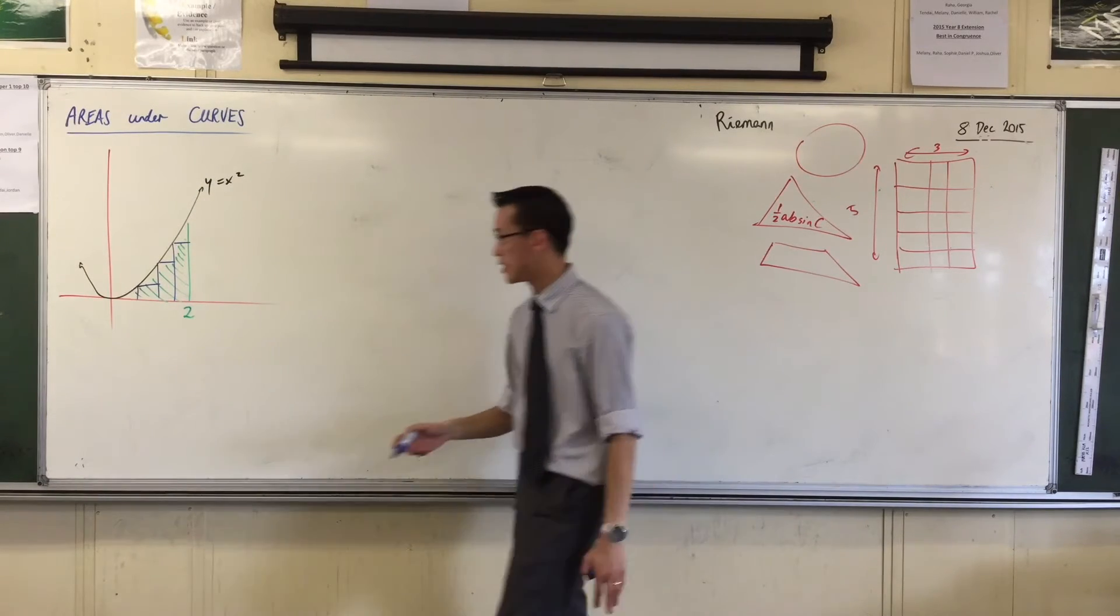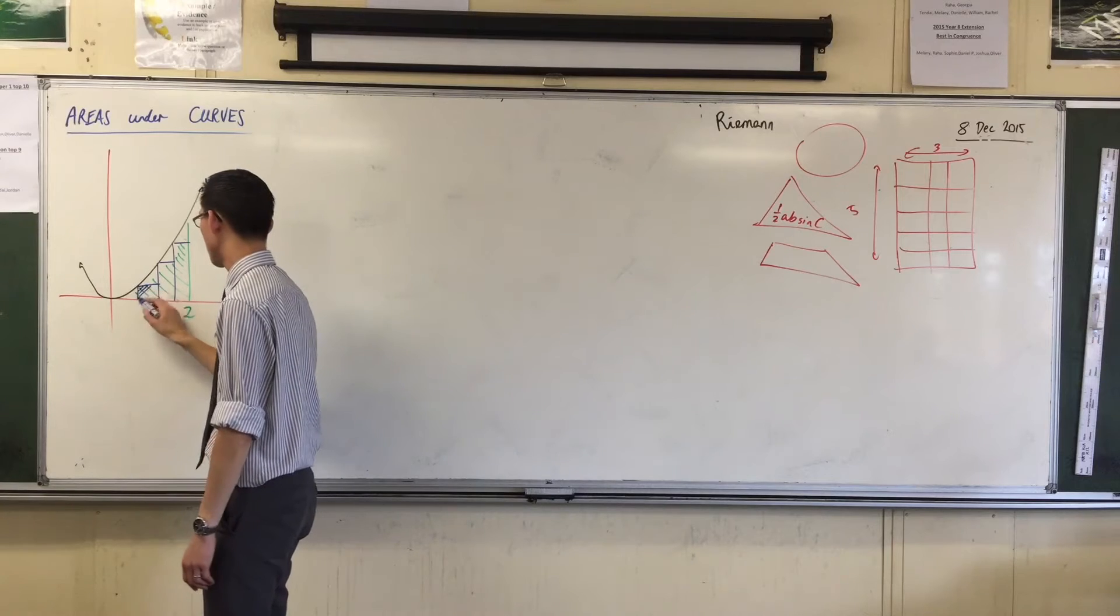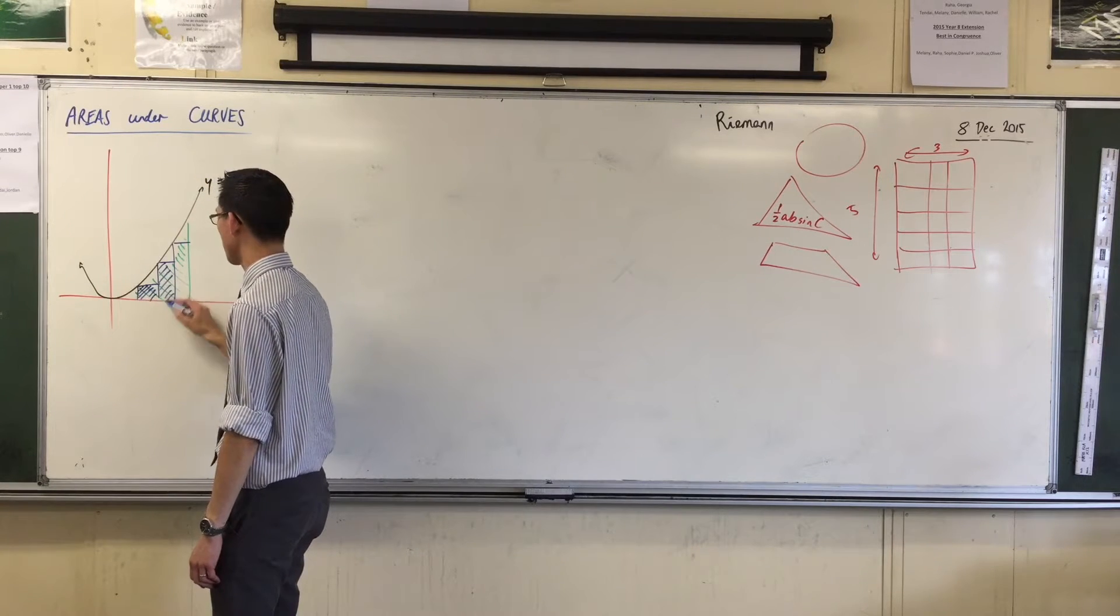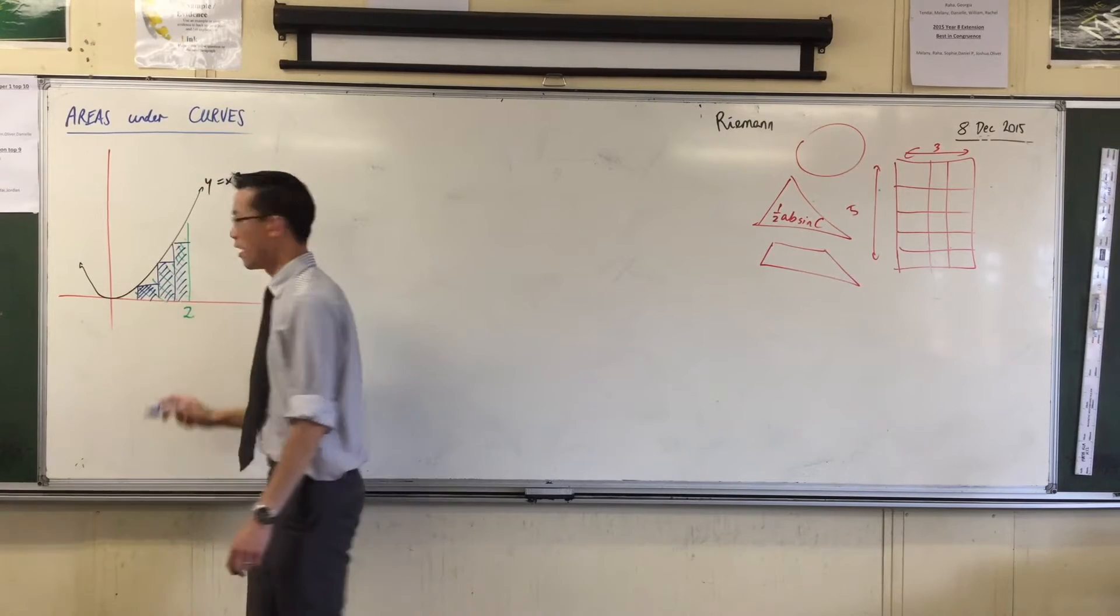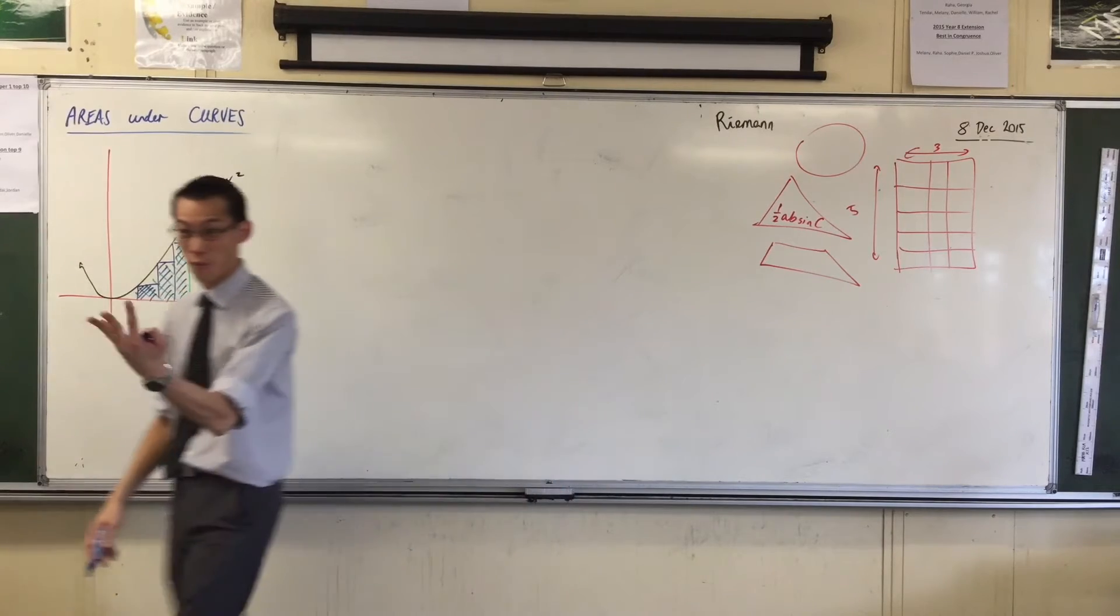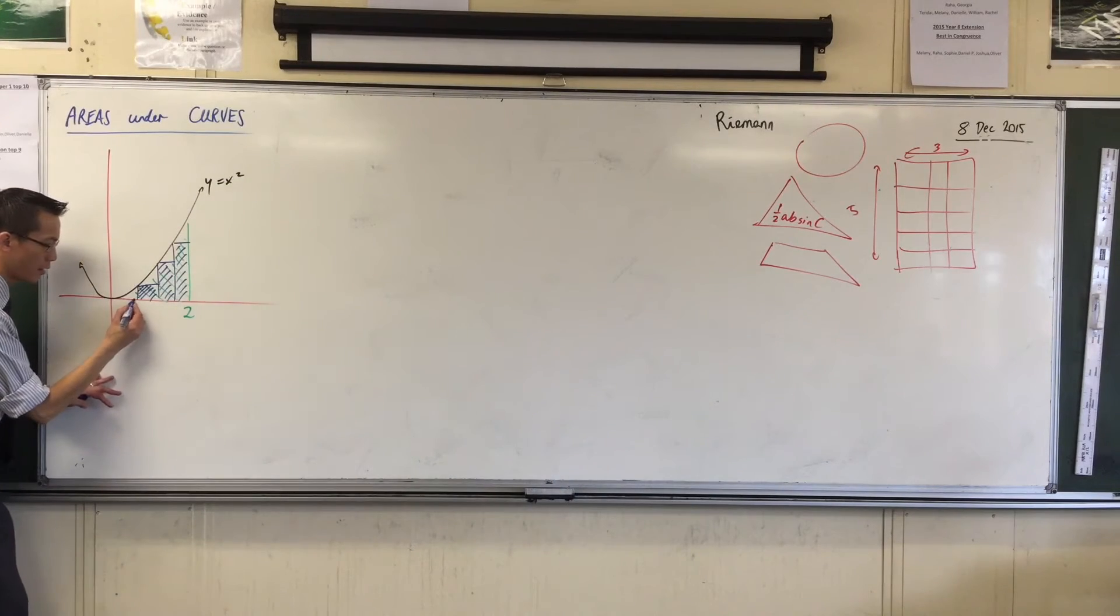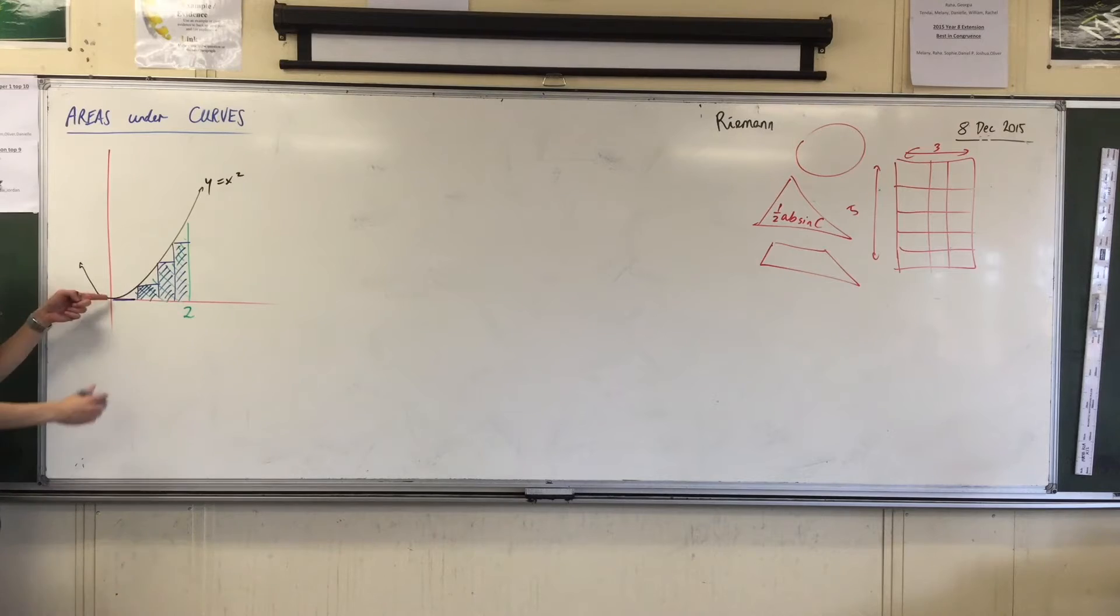Now, if I shade these in, there is actually, even though I've only drawn three rectangles in, there's actually a fourth one. Fourth one here. It just doesn't have any height because I'm on the ground there.